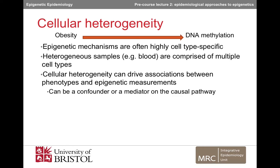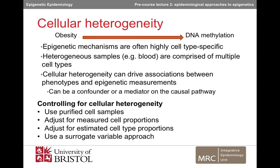Depending on the research question, cellular heterogeneity can either be a confounding factor — i.e. influencing obesity and DNA methylation — or on the causal pathway — i.e. obesity influences cellular heterogeneity, which influences DNA methylation. Either way, cellular heterogeneity has such a strong effect on epigenetic measurements that it should be considered in all epigenetic epidemiological studies, especially when interested in causality. There are several methods that attempt to control for cellular heterogeneity. One approach is to measure epigenetic data in samples that have been purified to contain only one cell type, or to measure epigenetic data in heterogeneous samples but measure the proportion of each subtype as well, and then adjust for this in the analysis stage.